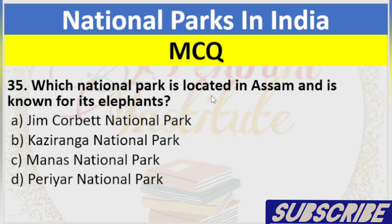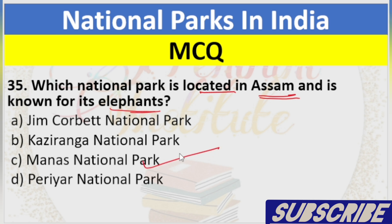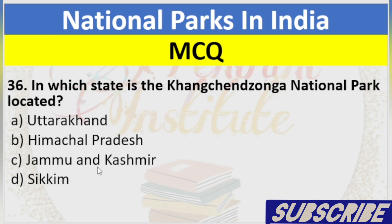Question 35: Which National Park is located in Assam and is known for its elephants? A. Jim Corbett National Park, B. Kaziranga National Park, C. Manas National Park, D. Periyar National Park. Answer: C. Manas National Park.